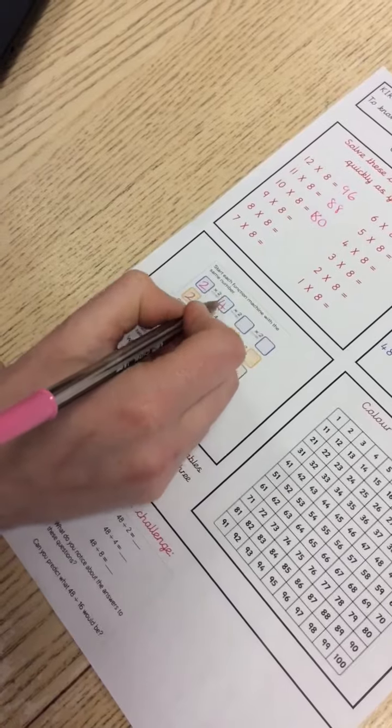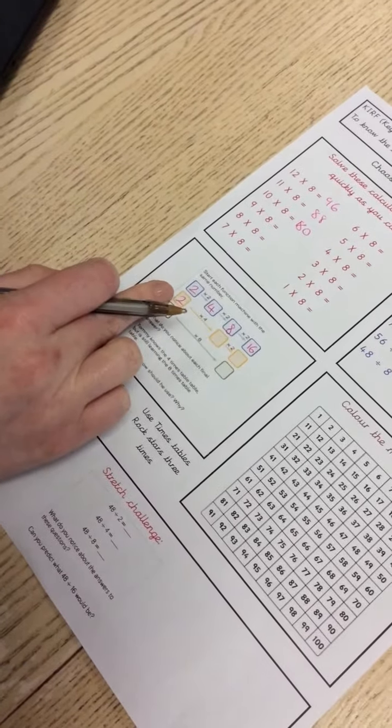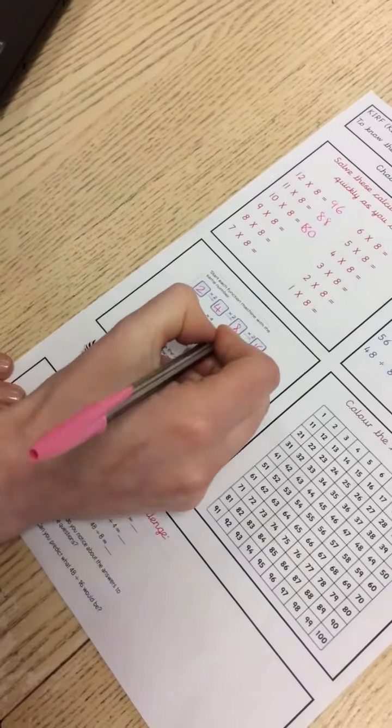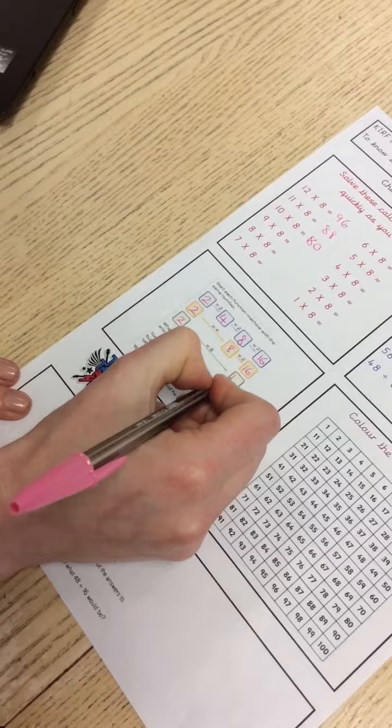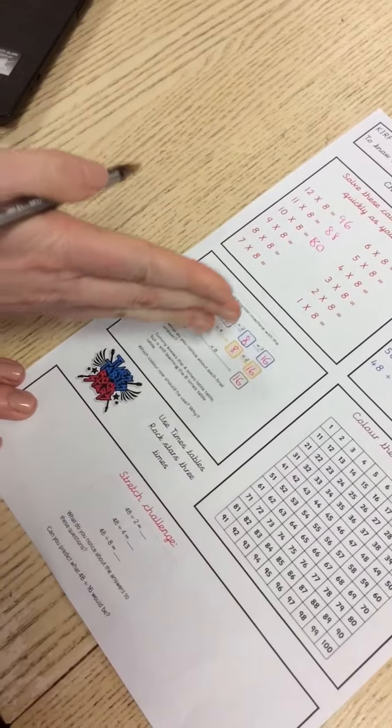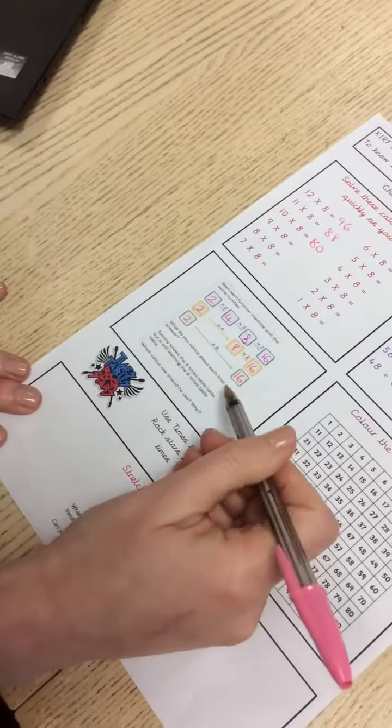Back to this function machine: 2 times 4 is 8, times 2 is 16, 2 times 8 is 16. So this is building up to tell you that you can use your 2s and your 4s to help you with your 8s. And then there's some questions there for you to answer.